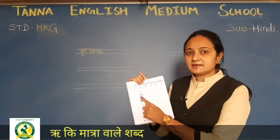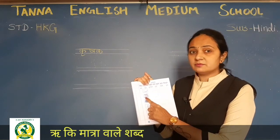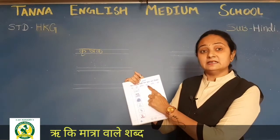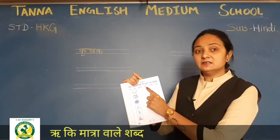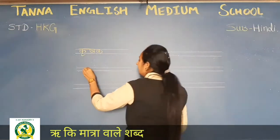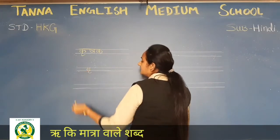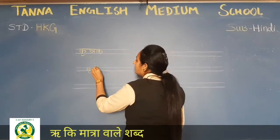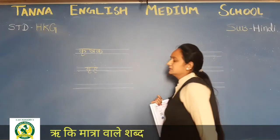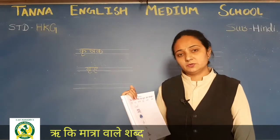Doosra picture kis ka hai? House ka hai na. To house ko Hindi mein kya bolenge? Grih. Pehle aap da karo ge, neeche ri ki matra, aur h. Gri, h.